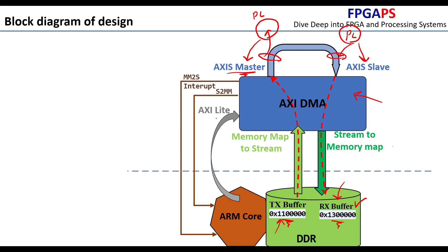We have one AXI Lite interface that the ARM core is connected to, giving the ARM core access to the DMA engine over AXI Lite. The ARM core can configure the DMA for correct data movement — for example, setting the source address, destination address, and how much data to send and receive.